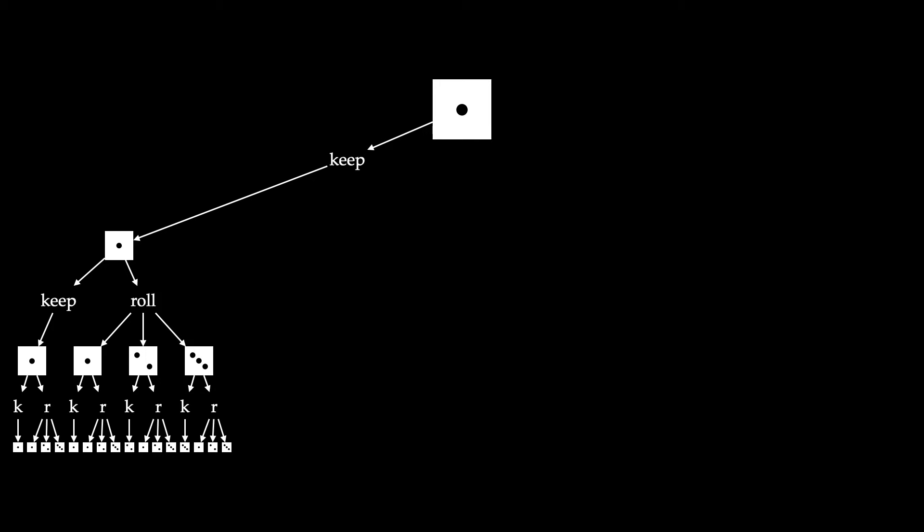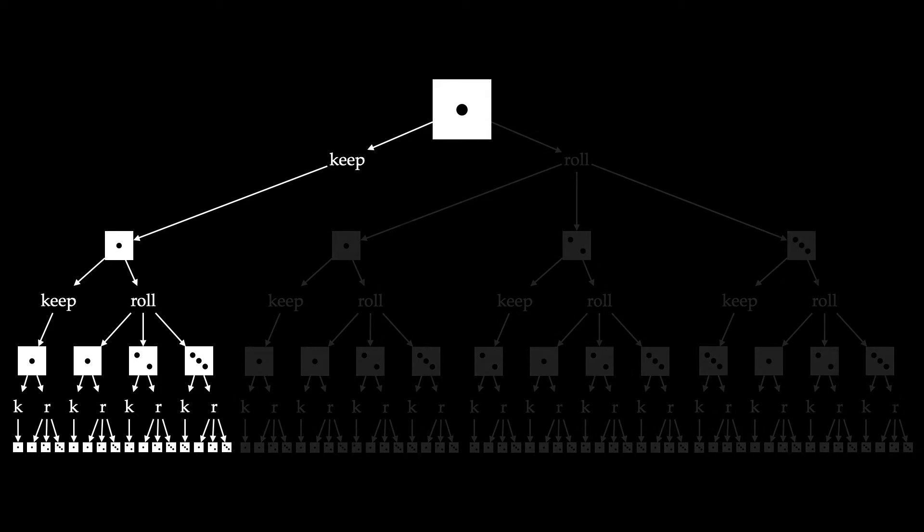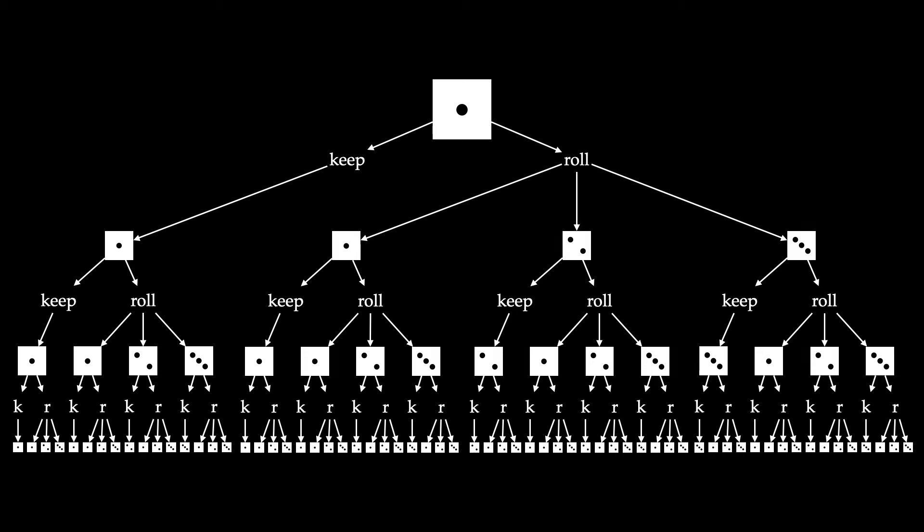Going back up, when we have a 1 showing with two turns left after choosing keep on the first action, we can repeat this and build up the entire search tree. The goal is to compute the utilities of being in each one of these states — that's how we determine the best sequence of actions in this die rolling game. Let's start with a simple example: computing the utility of being in a state where a 2 is showing on the die with two turns left.